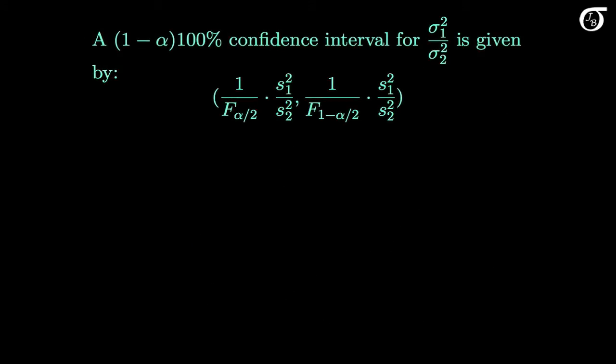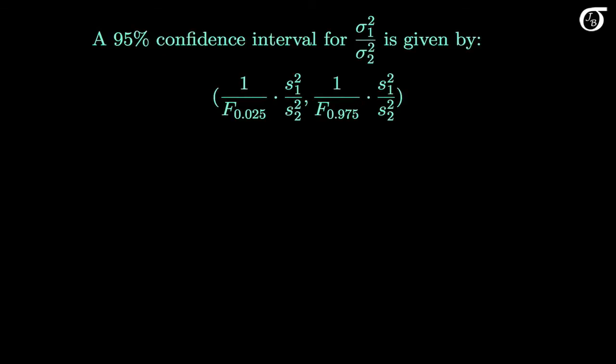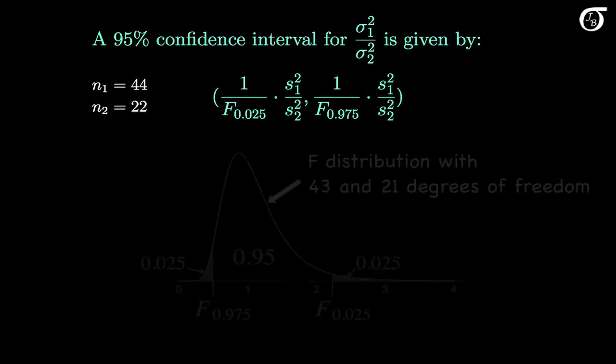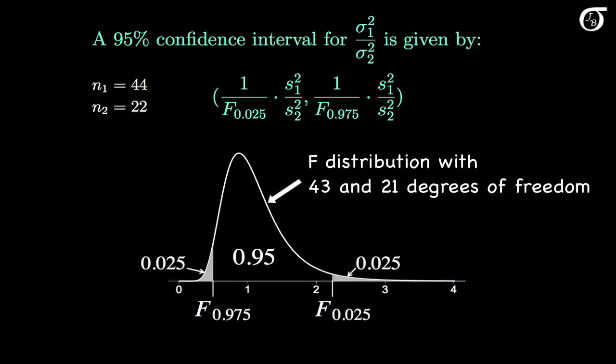Here's the appropriate formula for a 1-alpha times 100% confidence interval for the ratio of population variances. We could choose any confidence level here, but I'm going to choose a 95% confidence level. So alpha is 0.05, and alpha over 2 is 0.025. This is our formula for a 95% confidence interval for the ratio of population variances. We get f sub 0.975 and f sub 0.025 from the f distribution with the appropriate degrees of freedom. For our data, the sample size in group 1 was 44, and for group 2 it was 22. So we need to find these f values from the f distribution with 43 and 21 degrees of freedom.